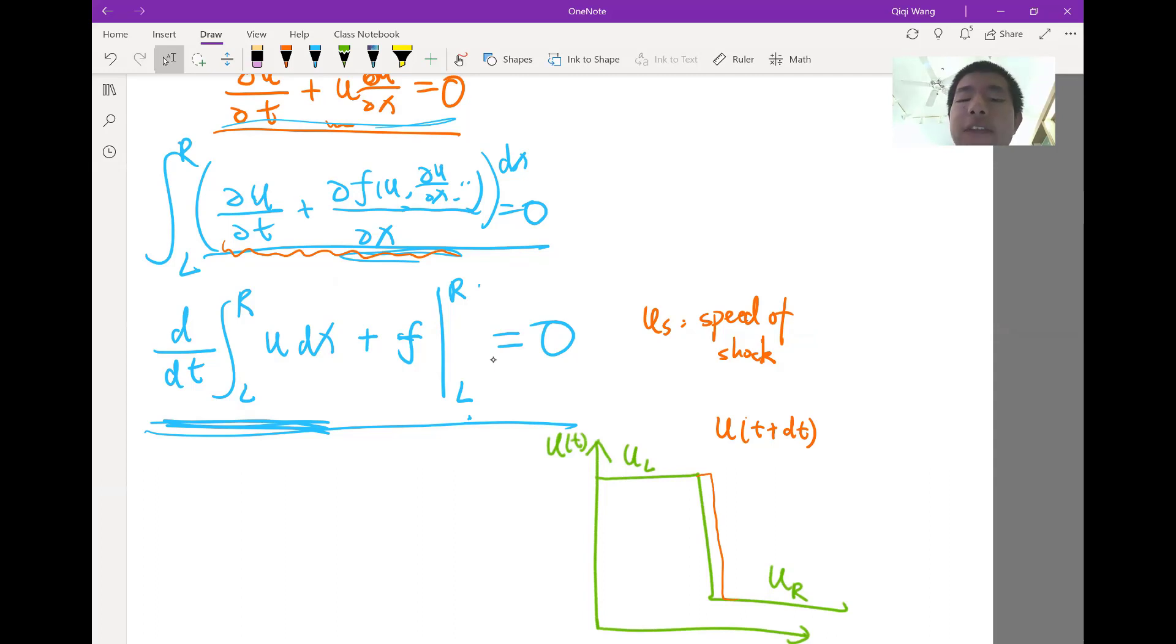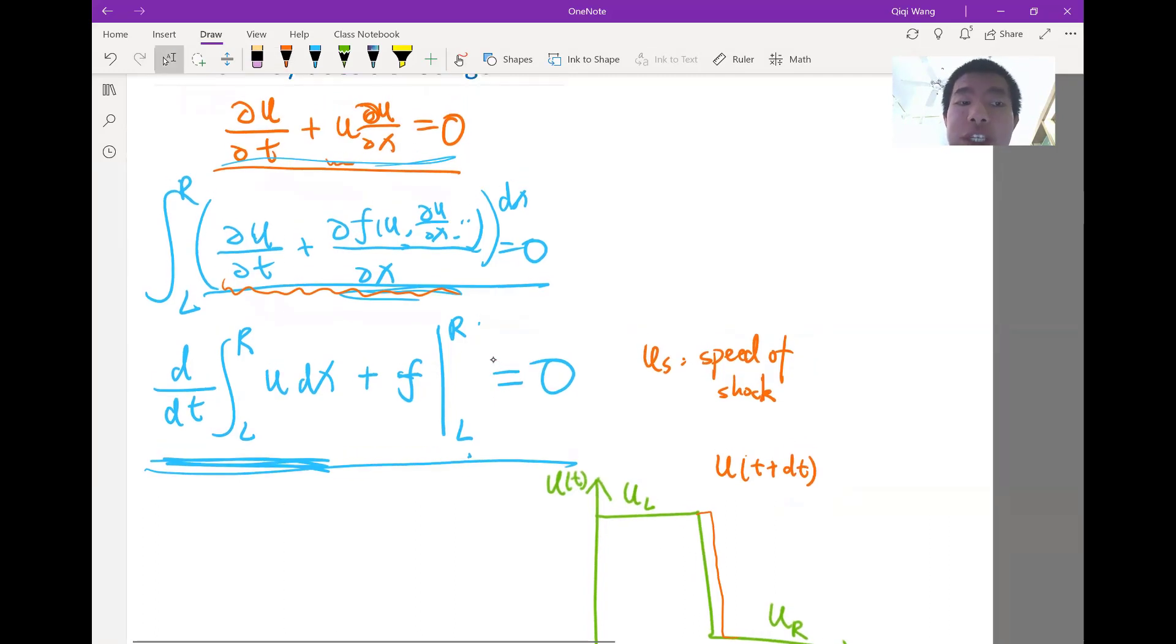So basically the solution over a constant region should stay the same constant. That's why even after infinitesimal amount of time, because du/dt is equal to 0 in the constant region. So ul and ur would stay the same.